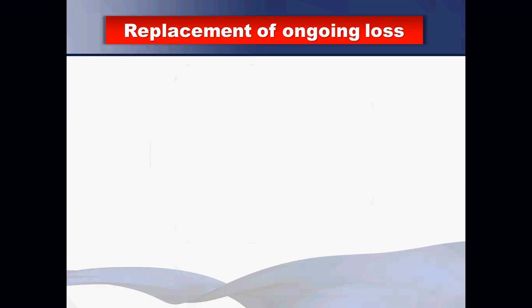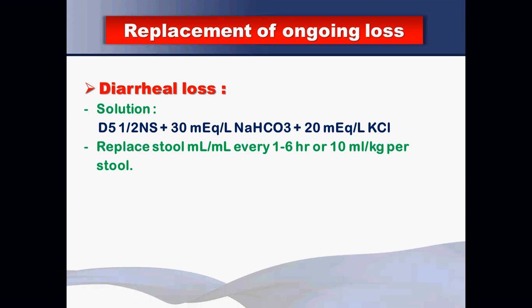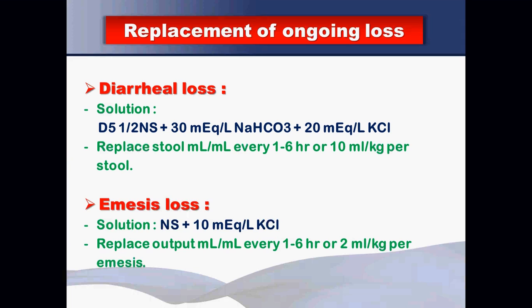Ongoing losses are added to the net deficit plus maintenance total. All fluid therapy calculations are approximations at the time of planning, so continuous monitoring is essential. Monitor vital signs (pulse and blood pressure), fluid intake and urine output balance, physical examination findings, and daily weight to detect fluid overload or persistent depletion. Electrolytes must be rechecked, as the type of dehydration can change — for example, from isonatremic to hyponatremic — requiring adjustment of the plan.